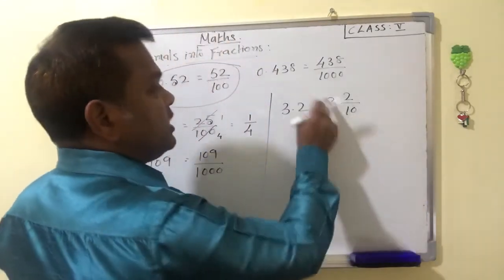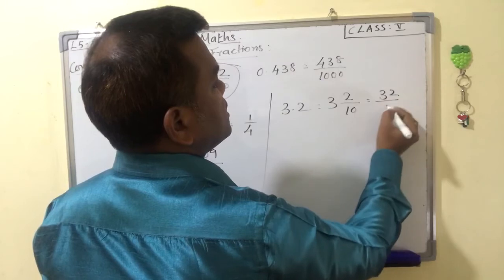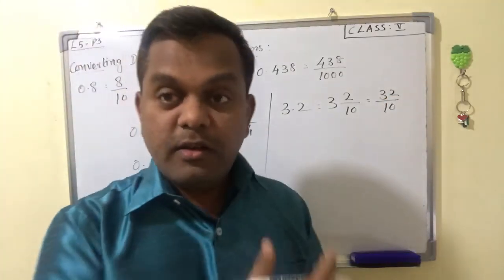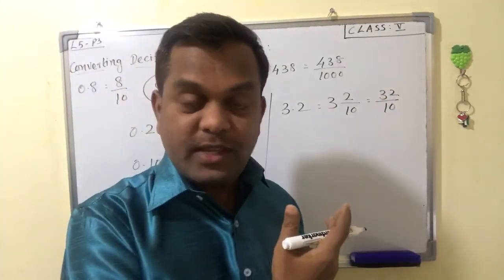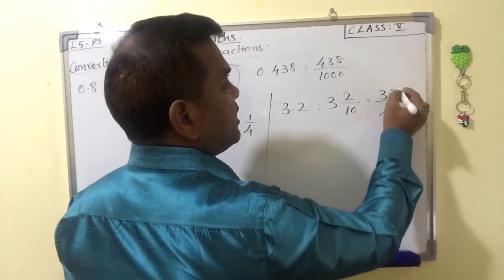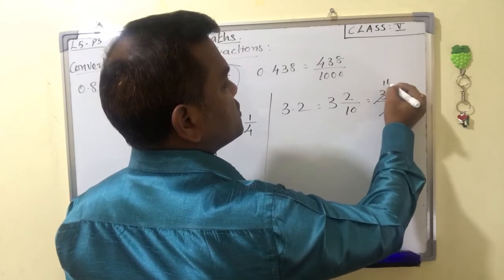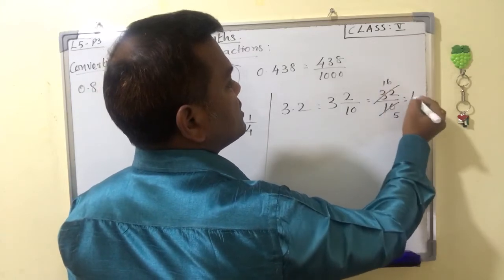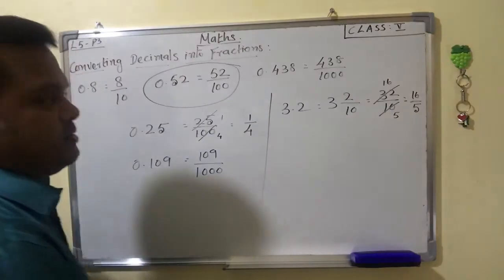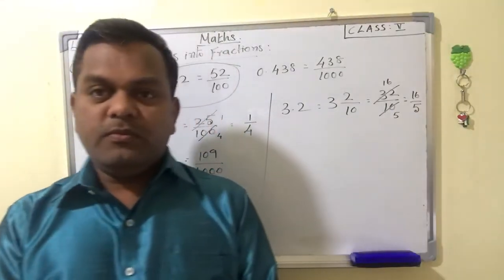Look here. 3 tenths are 30, plus 2 equals 32. So we get 32 by 10. Then we can simplify with the table of 2. 5 twos are 10, 16 twos — 6 twos are 12. The answer is 16 by 5.